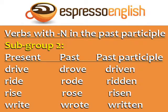Subgroup two has O in the past but not in the past participle. Drive, drove, driven. Ride, rode, ridden. Rise, rose, risen. Write, wrote, written. Notice that the sound of the I changes from the present to the past participle — the present is 'drive' and the past participle is not 'drivin'' but 'driven.'